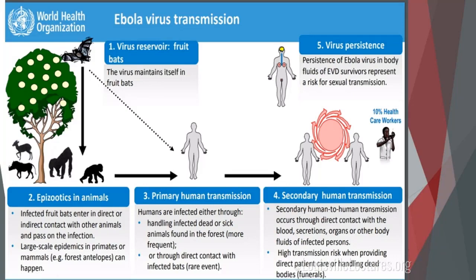This illustration from the World Health Organization shows the bat interacting with animals. The dotted line represents a very inconsistent but possible contact with human beings. More likely, humans interact with the animals — usually ending up consuming their carcasses — and from that point, the human becomes infected. That's also when human-to-human transmission begins.